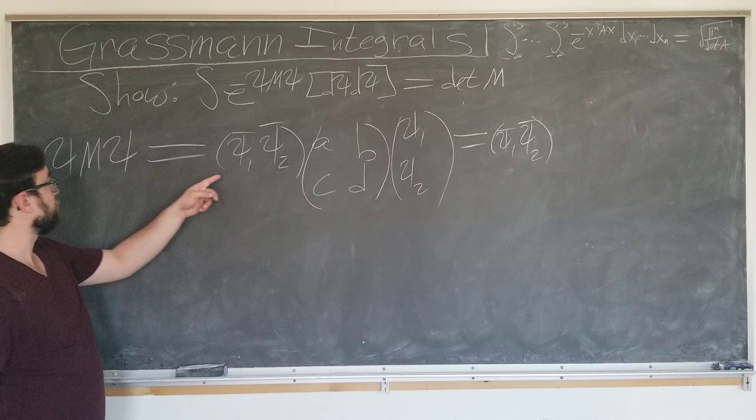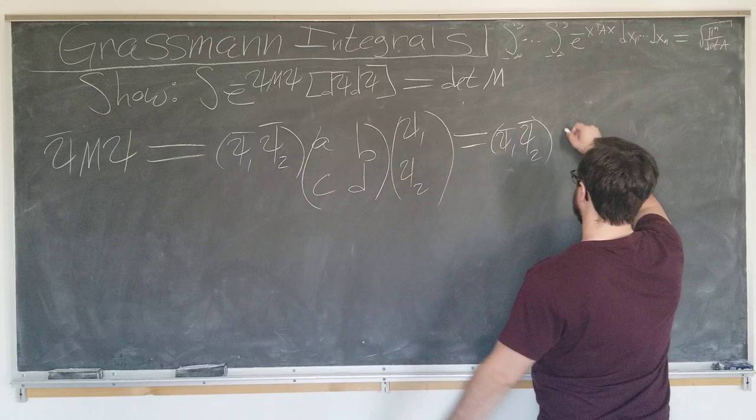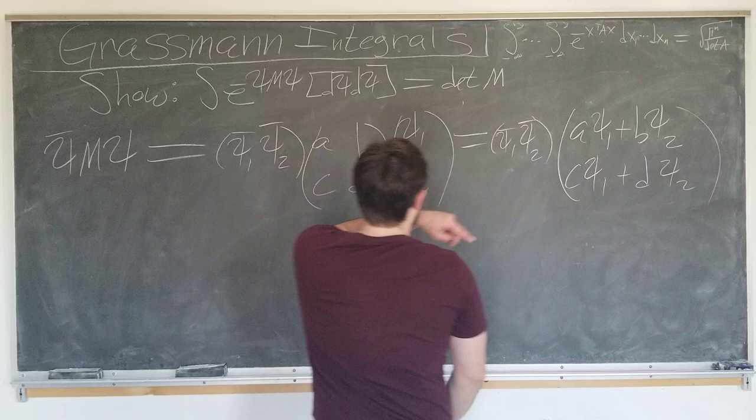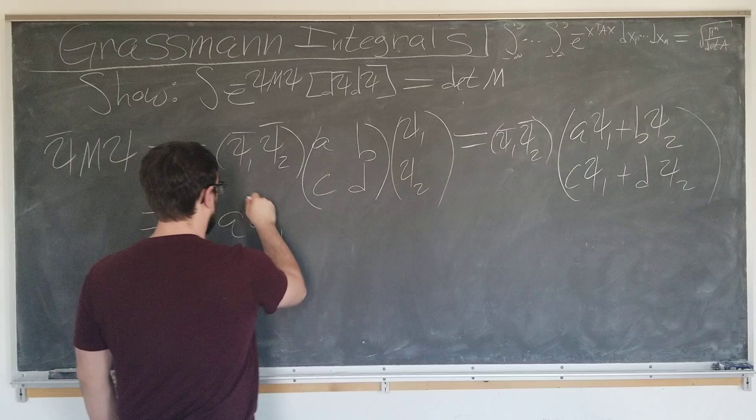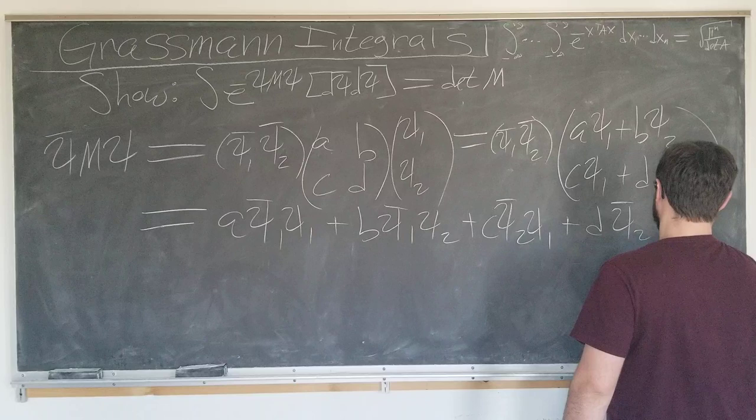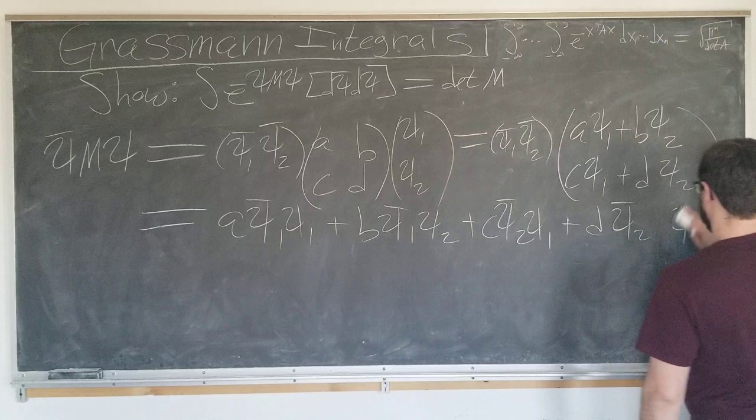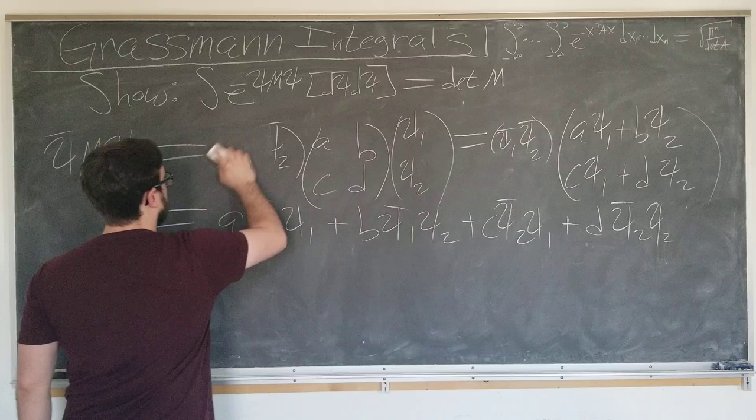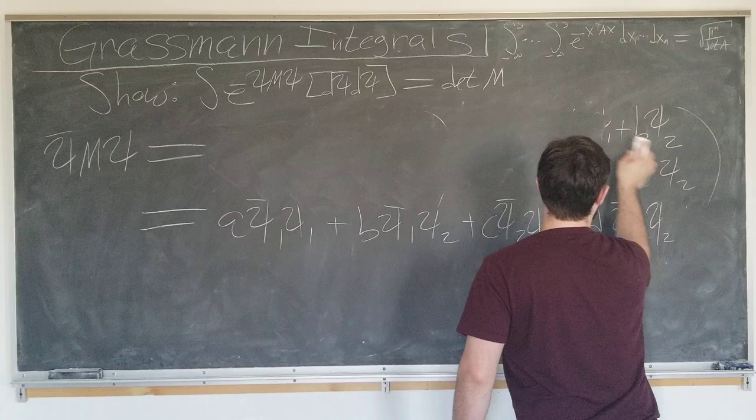These both need to have the bars. This is the matrix with the bars. I do apologize for that. Multiplying these together. A psi one plus B psi two, C psi one plus D psi two. Now I multiply these two matrices together. This will simply be equal to A psi one bar psi one plus B psi one bar psi two plus C psi two bar psi one plus D psi two bar psi two. Alright, this is obviously not zero yet, because we have just two variables here.